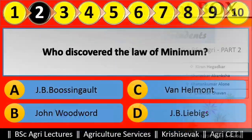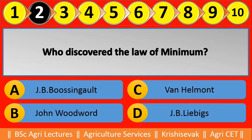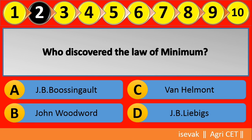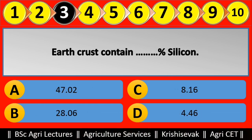Question 2: Who discovered the law of minimum? Options are: (a) JB Bisingolt, (b) John Wedwood, (c) Van Helmont, (d) JB Liebig. Right answer is JB Liebig. Question 3: Earth's crust contains blank percent of silicon. Options are: (a) 47.02, (b) 28.06, (c) 8.16, (d) 4.46. Right answer is option C: 8.16.